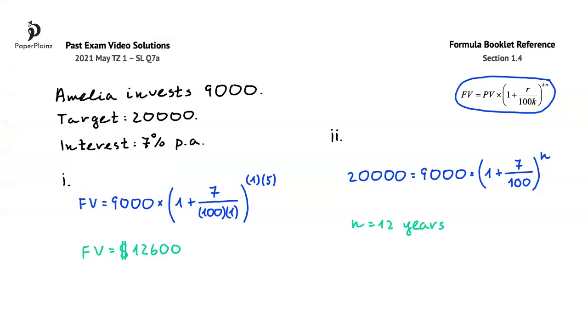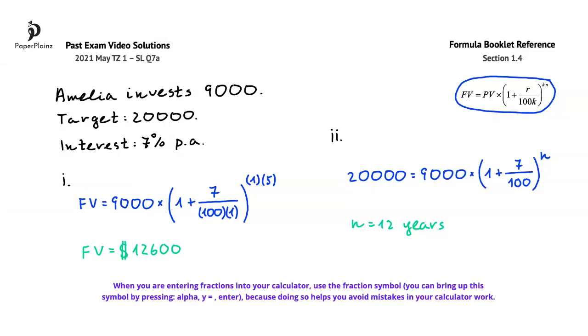An exam-taking tip to take away from here is that when you are entering fractions into your calculator, use the fraction symbol, which you can bring up by pressing alpha, y equals, and enter, because doing so helps you avoid mistakes in your calculator work. This might seem like an obvious and somewhat annoying tip, but I decided to include it here because I've seen many students in the past use the division sign when working with fractions. In itself, this is not a mistake, but marks are often lost, especially on more complicated fractions, because when you use the division sign, you have to be very careful when you enter products into the numerator and the denominator.